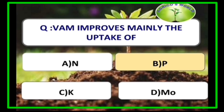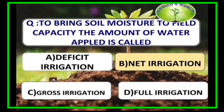VAM improves mainly the uptake of phosphorus because it solubilizes phosphorus and makes it mobile so that plants can absorb it. To bring soil moisture to field capacity, the amount of water applied is called net irrigation.